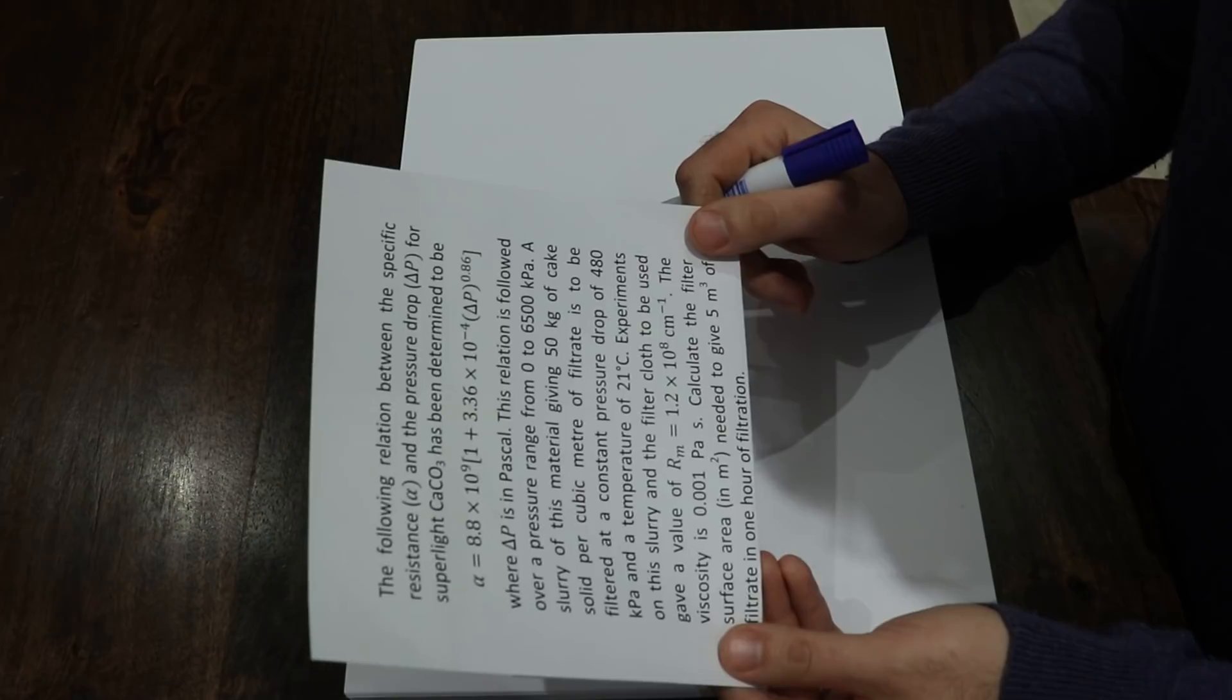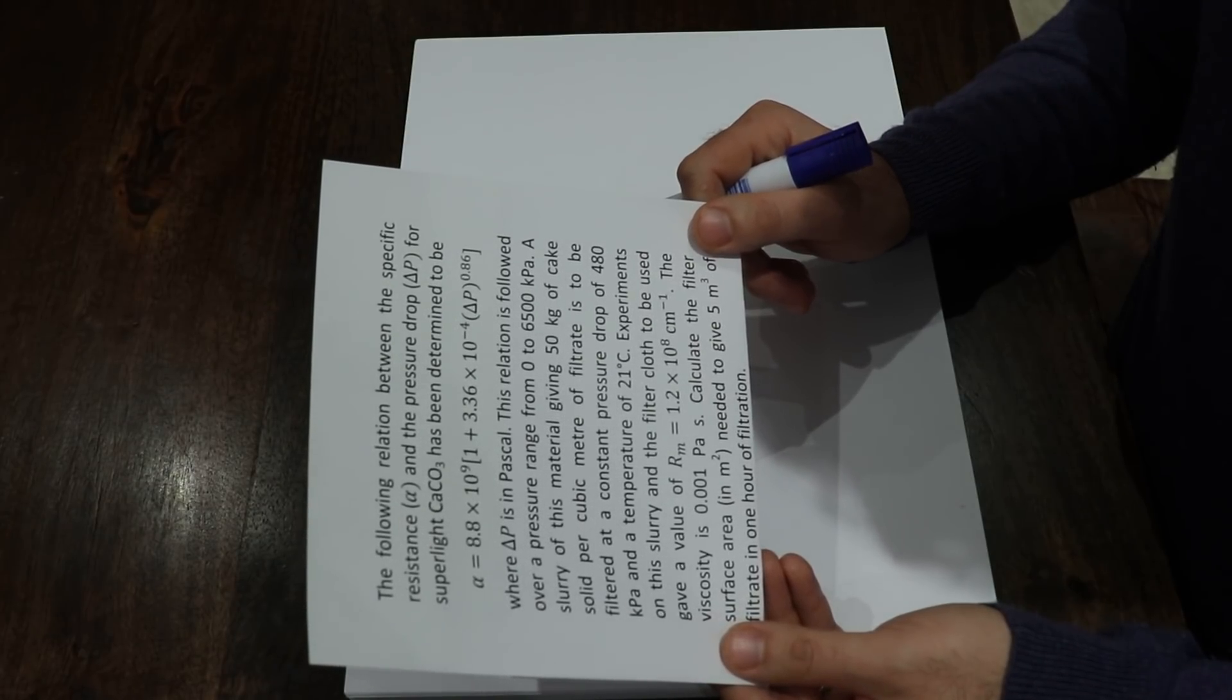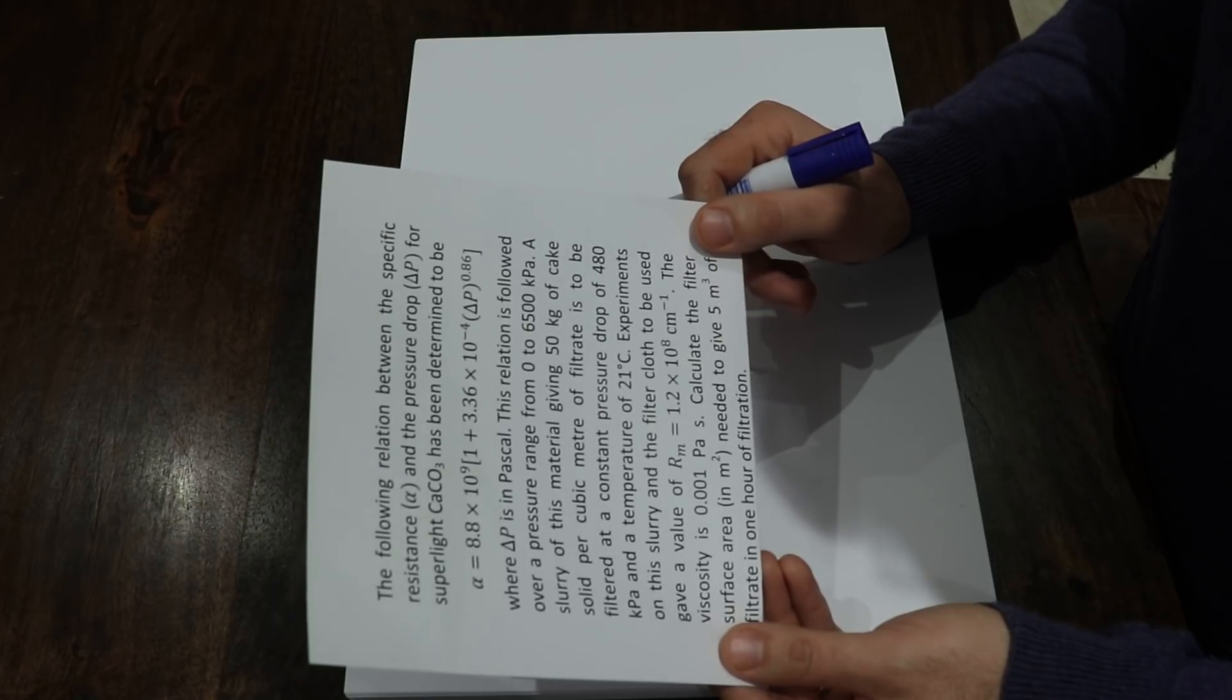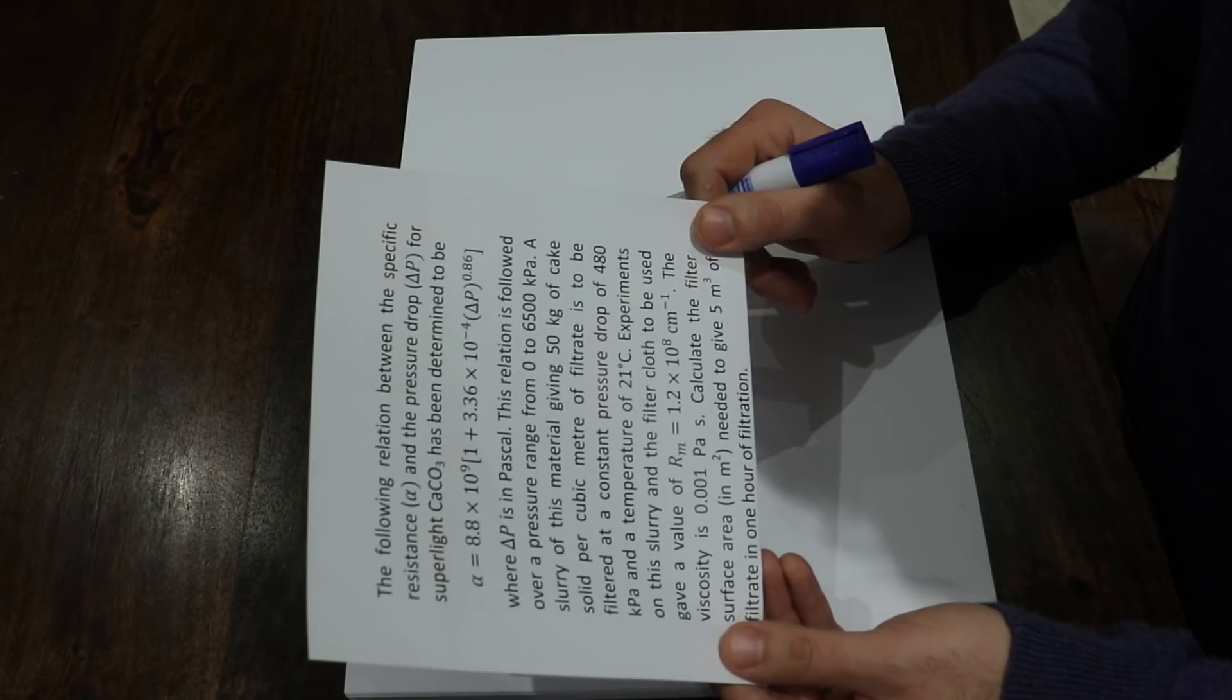This relation is followed over a pressure range from 0 to 6500 kilopascal. A slurry of this material giving 50 kilogram of cake solid per cubic meter of filtrate is to be filtered at constant pressure drop of 480 kilopascal and temperature of 21 degrees.